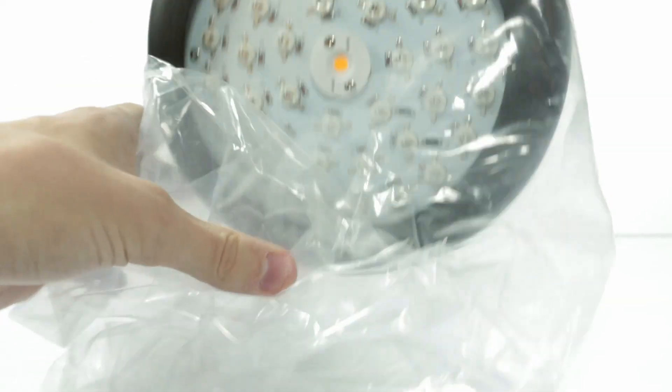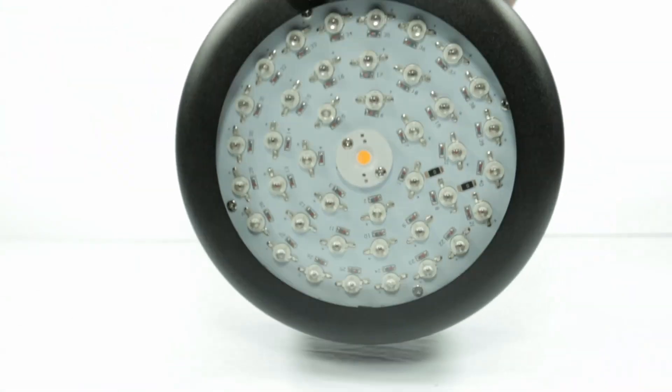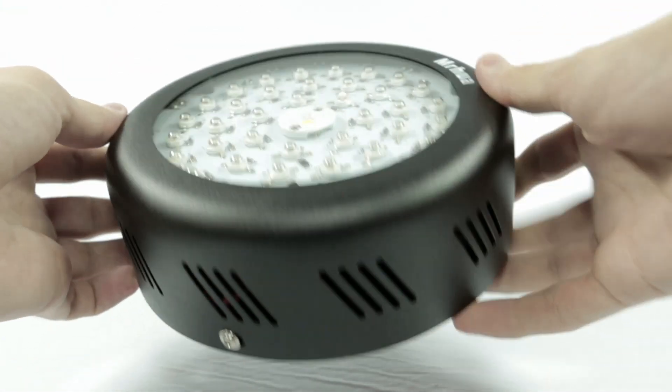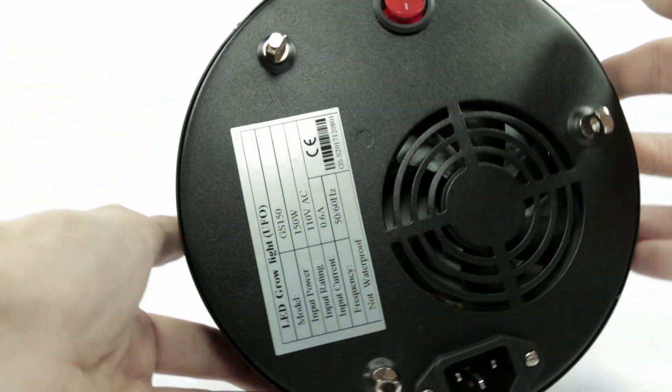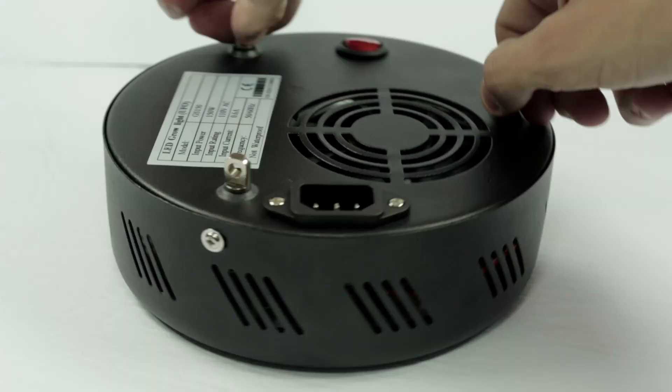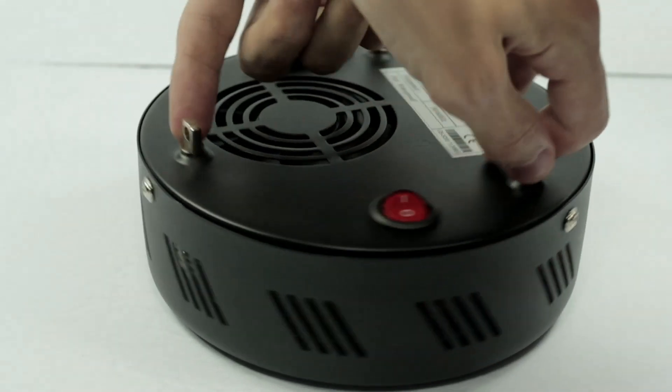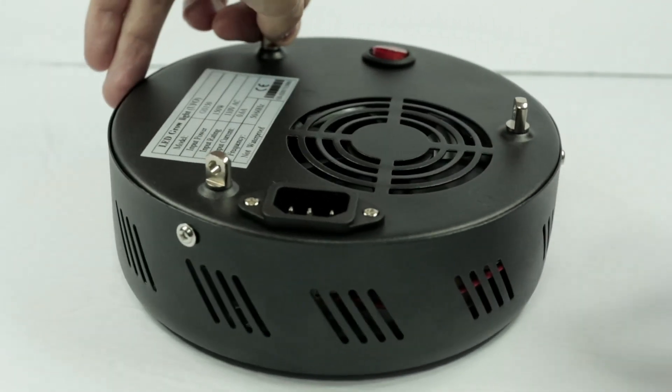I really like this UFO form factor because I can fit it into a small space. As I rotate the light around, I don't notice anything rattling inside or anything loose. Everything feels pretty sturdy. The venting around the entire light does a really good job of keeping it cool while it's running, and when I touch it it's never more than lukewarm.